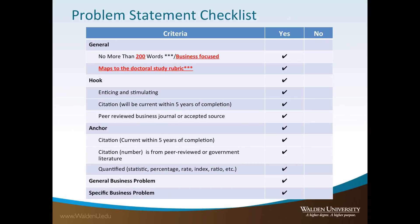A problem statement checklist is presented here. This is a general checklist that may be very helpful to you. However, if you map to the doctoral study rubric, you should be fine. Some general criteria are that it should be no more than 200 words and must be a business-focused topic. It must contain a hook that is enticing and stimulating with current citations. It must contain an anchor with current citations, and that anchor must include a number. And it must contain a general and specific business problem. The key is to map to the rubric.